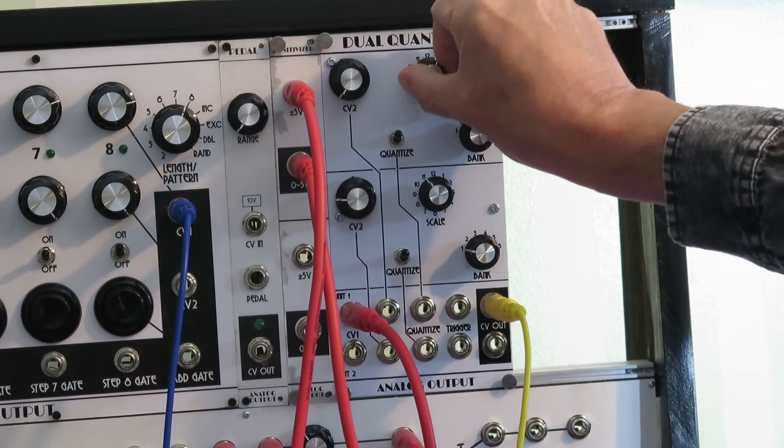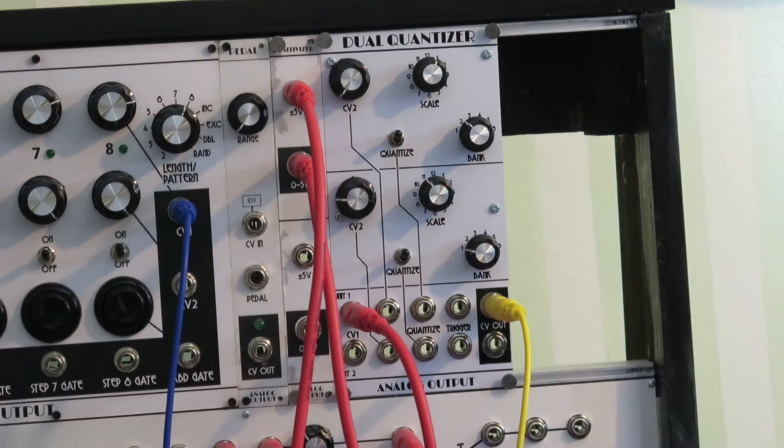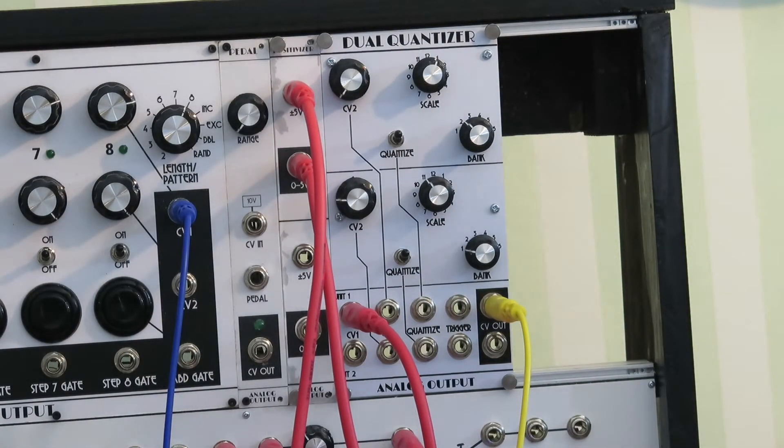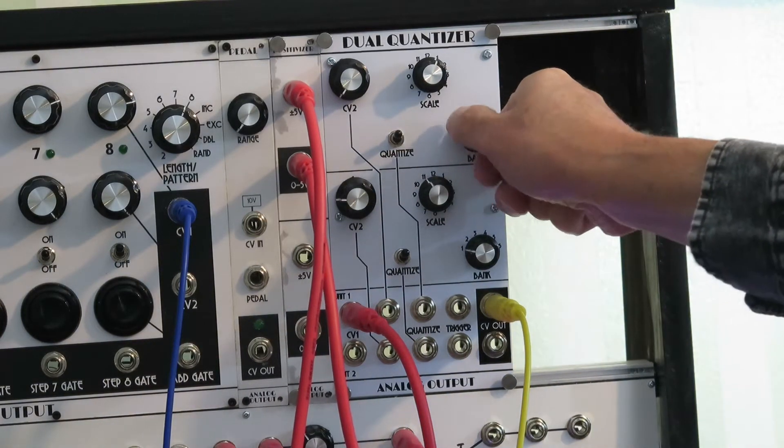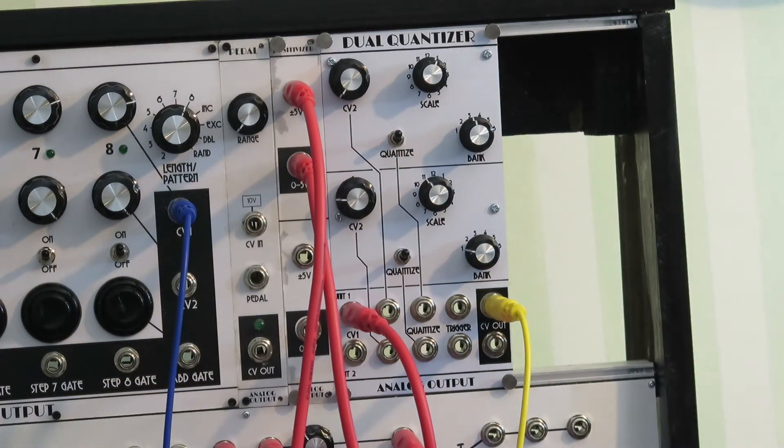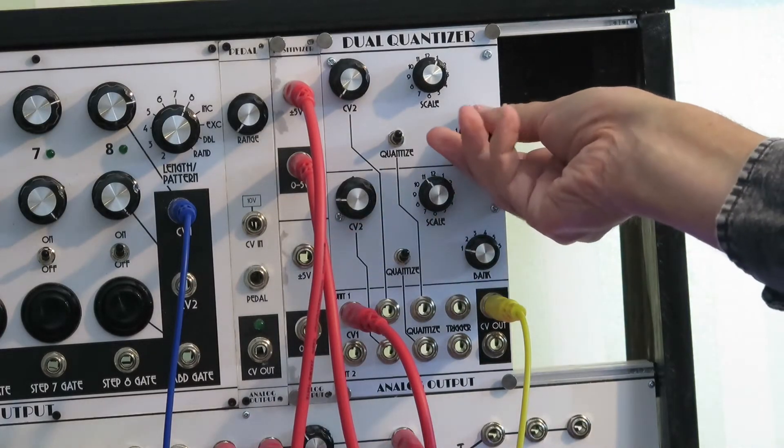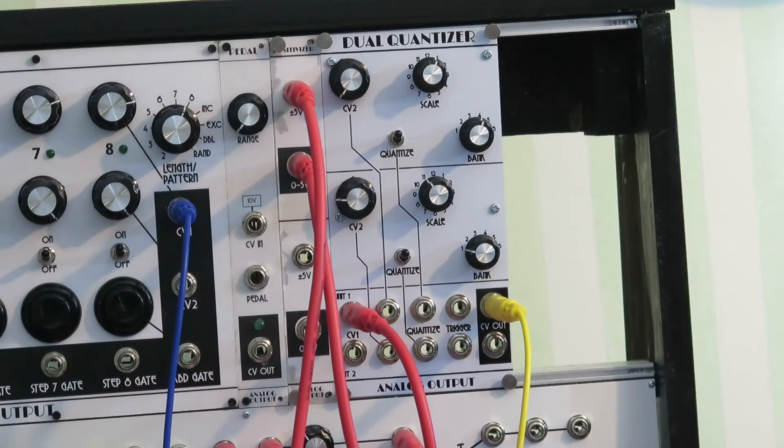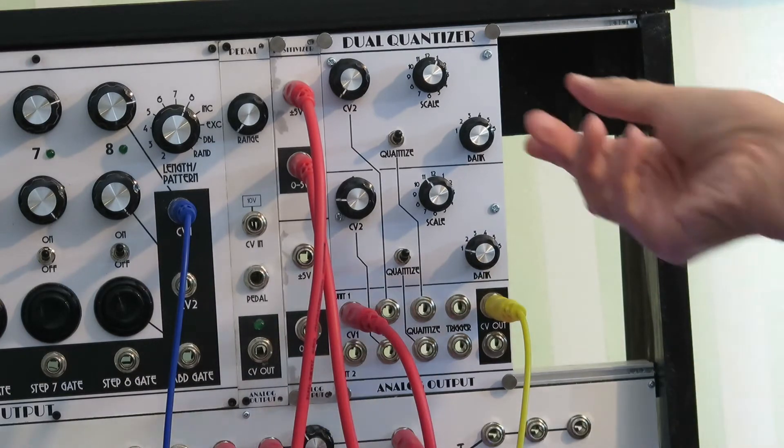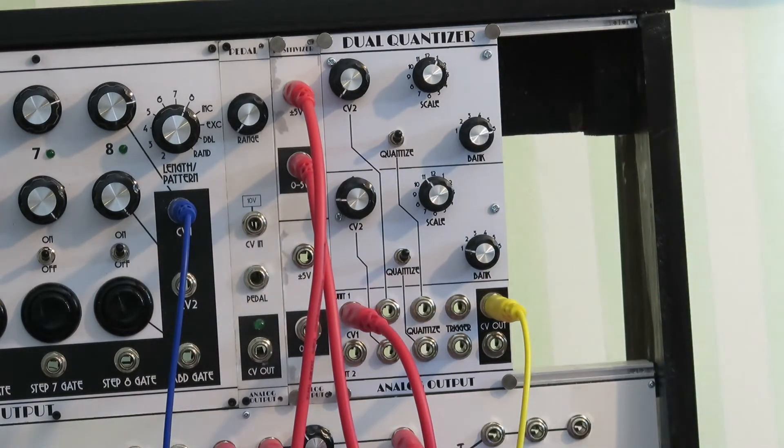So 12 different major scales, and then if we go to bank 3, these are 12 different harmonic minor scales, bank 4 is 12 different melodic minor scales, bank 5, 12 different pentatonic scales, bank 6, 12 different blues scales.